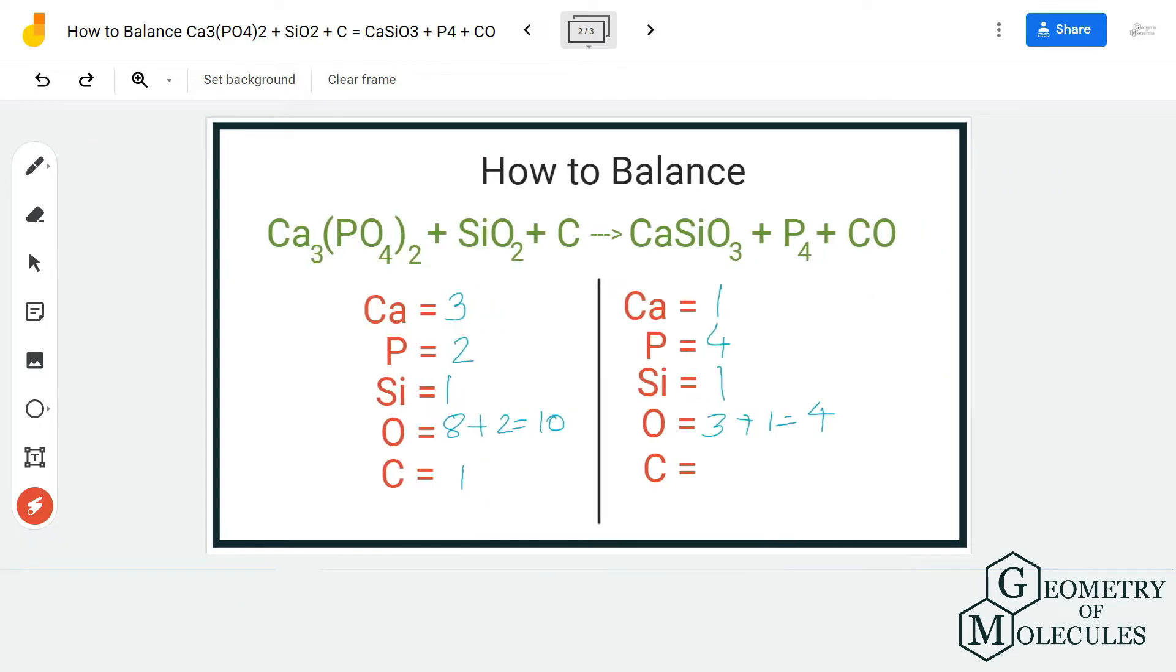For calcium, we have three atoms on reactant side and one on product side. Similarly, two phosphorus atoms on reactant side, four on product side. Silicon: we have one atom each on both sides. For oxygen, we have eight plus two, that is ten on reactant side, and three plus one, four on product side.